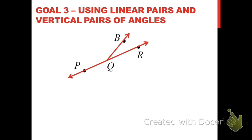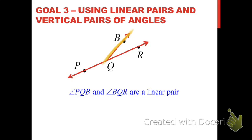Now, in this picture, you ought to recognize that angle PQB and angle BQR are a linear pair. The way that you determine two angles are a linear pair is, first of all, you determine that they're adjacent to one another — they have a common vertex and a common side, and they don't share any common interior points. They don't overlap. And their sides that are not common form opposite rays: ray QR and ray QP are opposite rays. I'm interested in what is the relationship between the measures of angles PQB and BQR, since they are a linear pair.